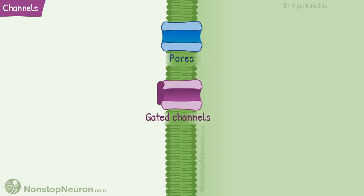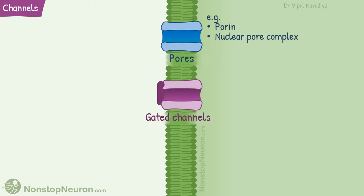Channels can be of two types: pores and gated channels. Pores are always open. Examples include porin, the nuclear pore complex, and aquaporin.